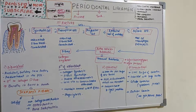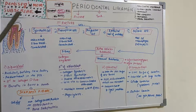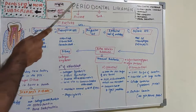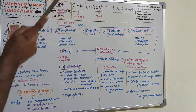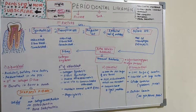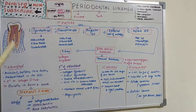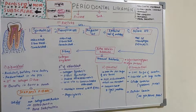We will move on to the principal component of the cells sector, that is the synthetic cell — fibroblast — which is the architect, the builder, and the caretaker of the periodontal ligament, and which is very predominant in the periodontal ligament.